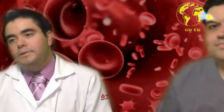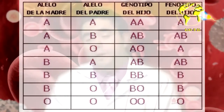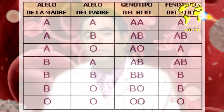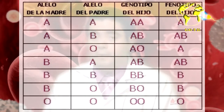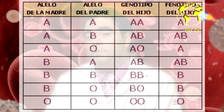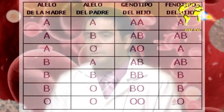The blood groups are those which determine what group or RH a certain person pertains to. These blood types are antigens that are located in the blood on the outside of the red blood cell and they determine the blood type. There are four types: A, B, AB, and O, and the blood type can either be positive or negative, and this is based on genetic traits.